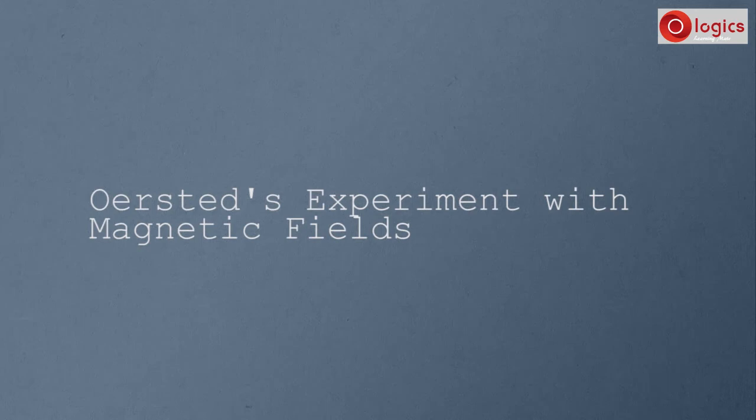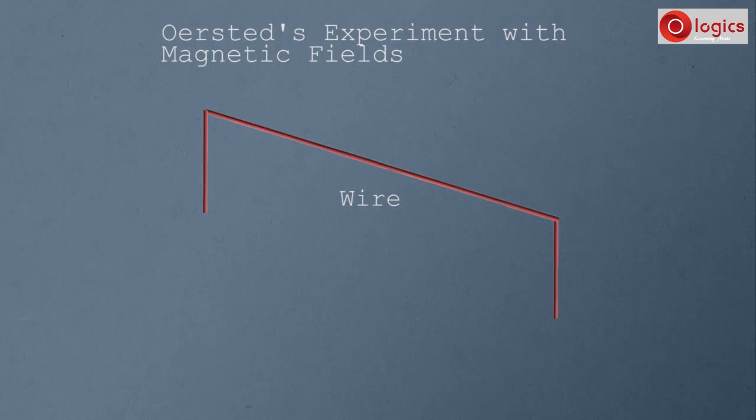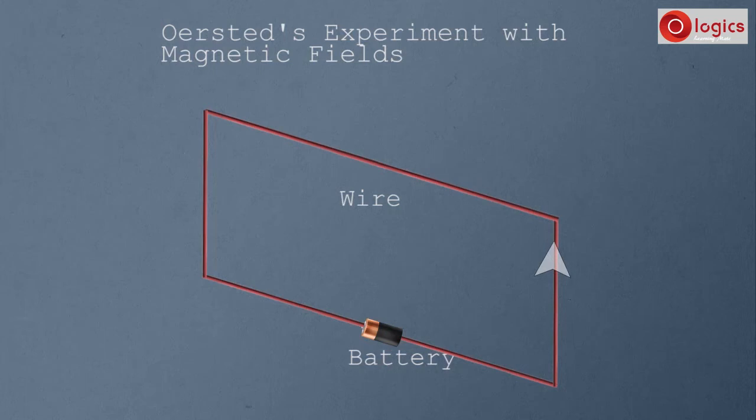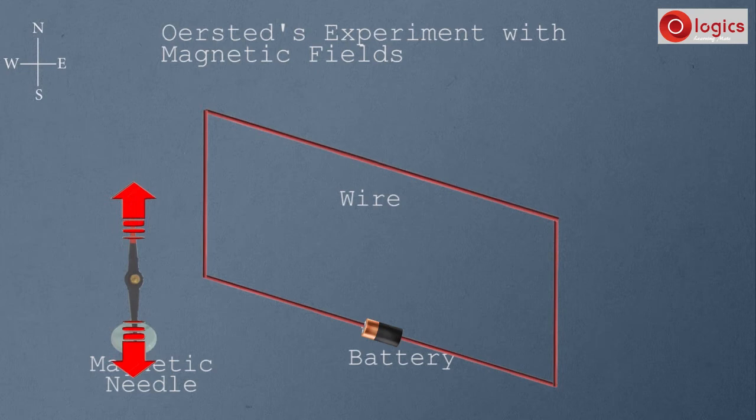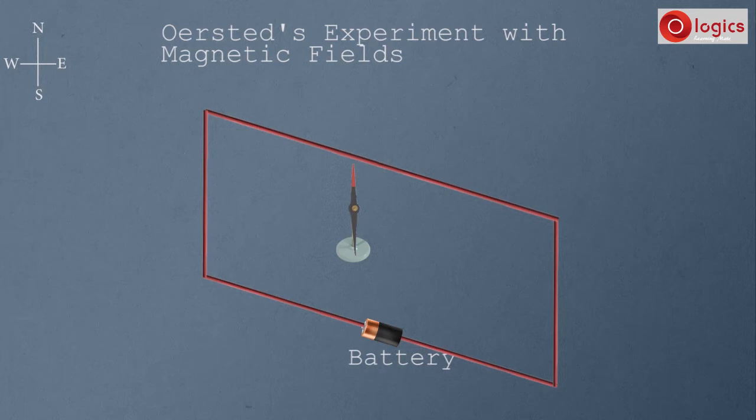Now let us understand the theory of Oersted's experiment with magnetic fields. This is the electric wire, connected to a battery. Current is flowing in the wire in this direction — this is a basic electric circuit. This is the freely suspended magnetic needle; it points towards the geographical north and south directions. Place the magnetic needle near the electric circuit. Now, no current is flowing — observe the magnetic needle's direction.